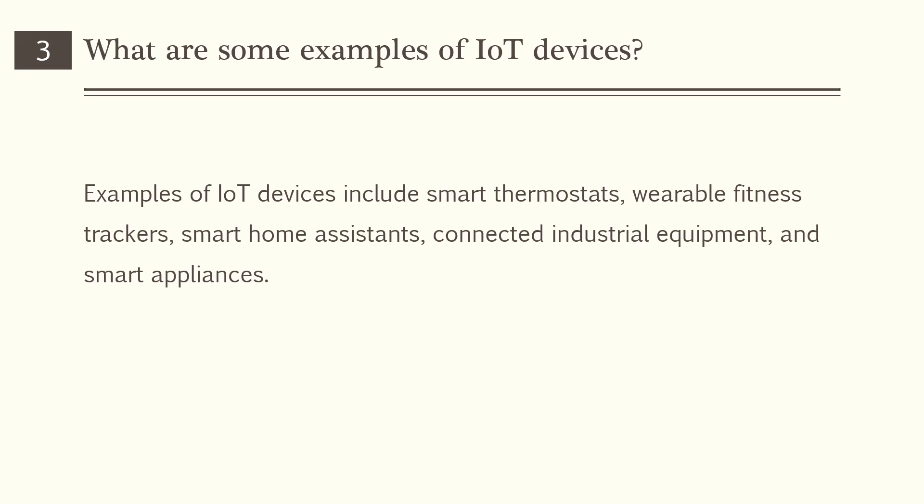What are some examples of IoT devices? Examples of IoT devices include smart thermostats, wearable fitness trackers, smart home assistants, connected industrial equipment, and smart appliances.